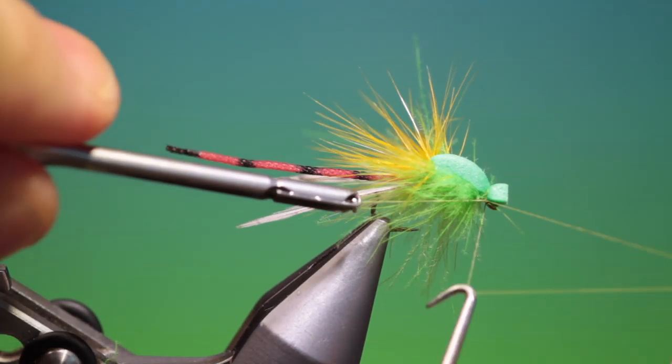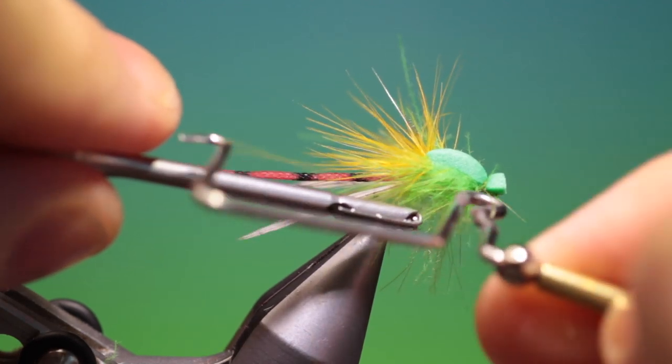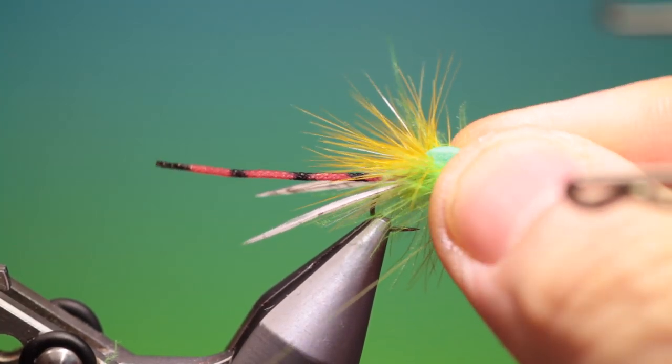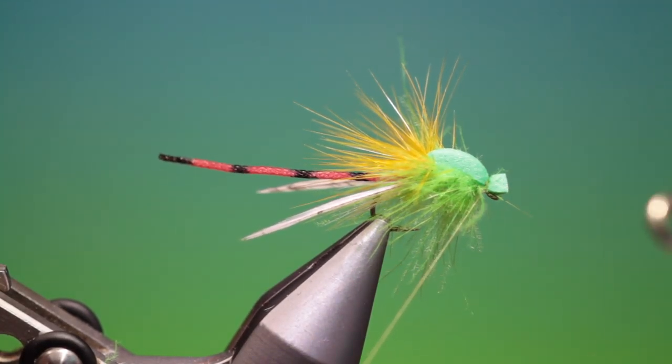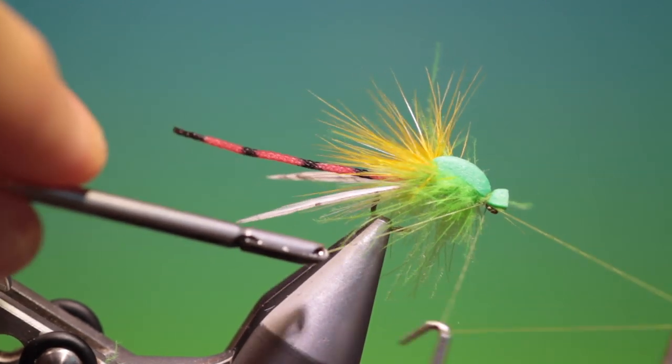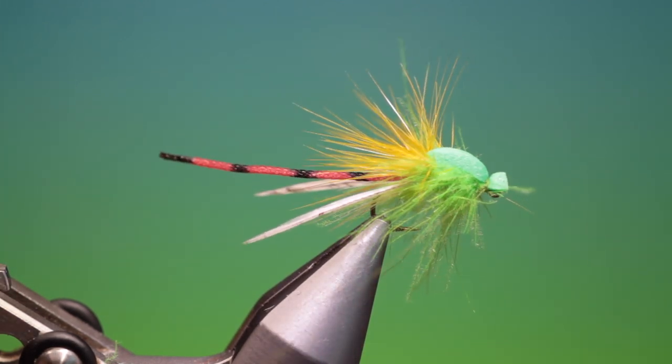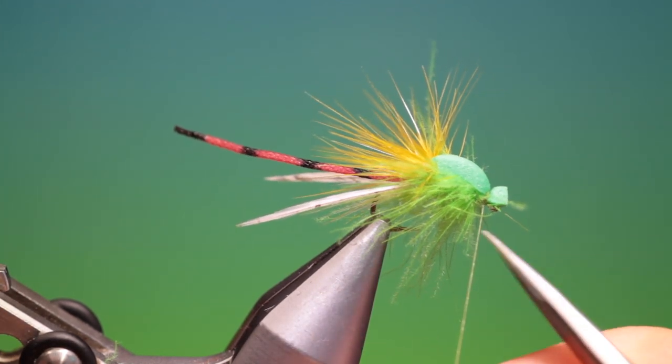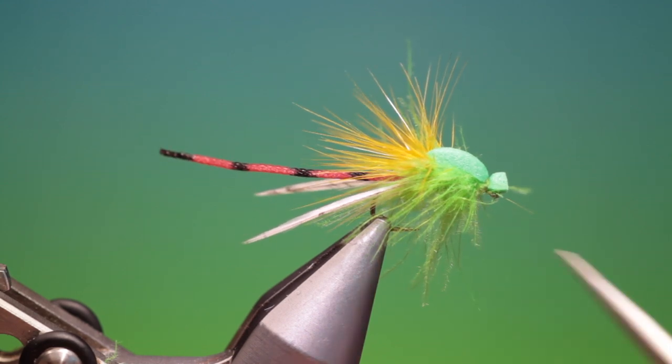Take our whip finisher. There are some that put rubber legs in here at this stage, one each side, but I think there's enough with the CDC and hackle. And we'll just remove that.